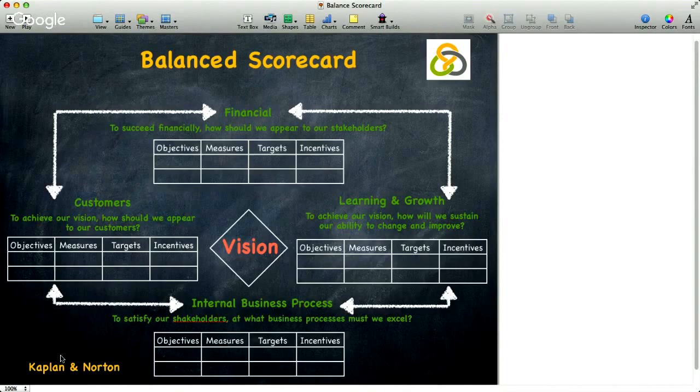Through investment in customers, suppliers, employees, processes, technology, and innovation. Central to this model is of course the vision and the purpose of the overarching strategy of the business. There are four elements: financial, customers, internal business processes, learning and growth.